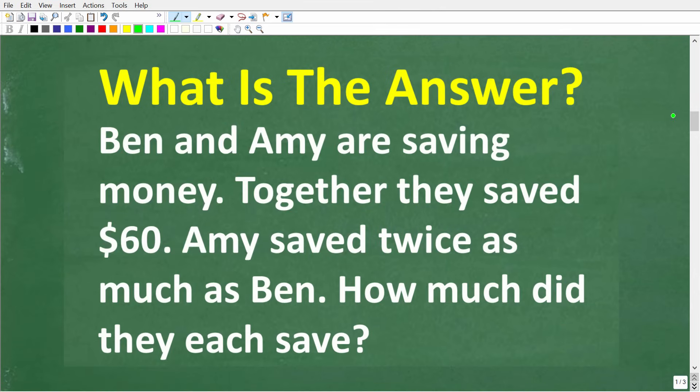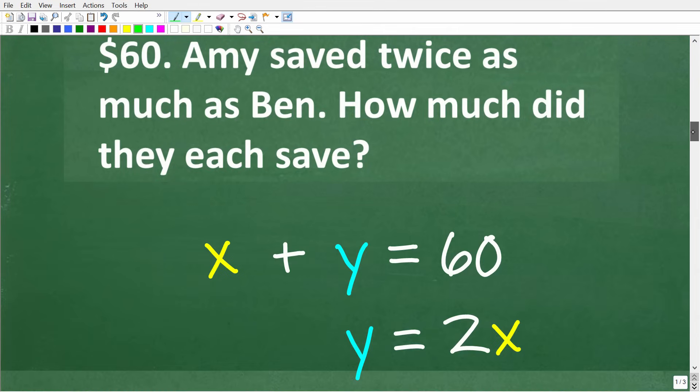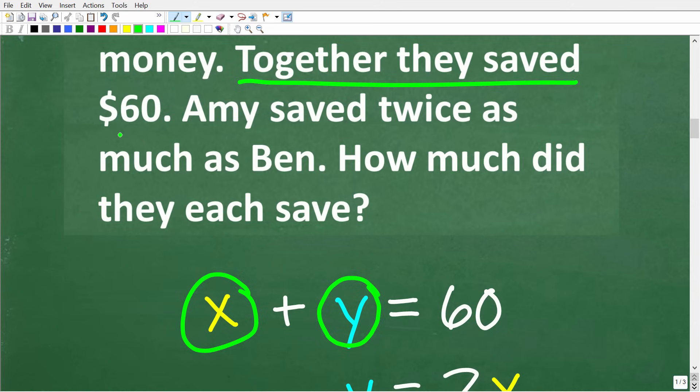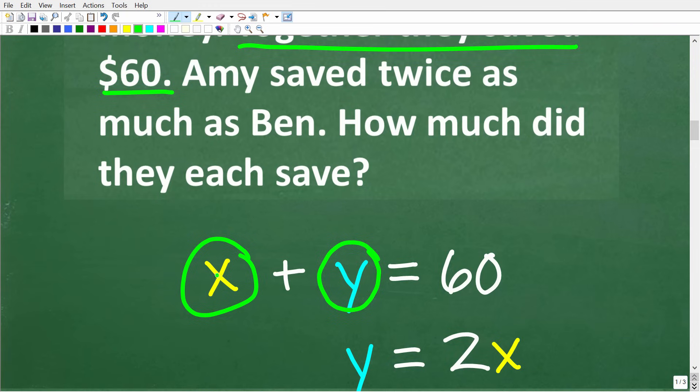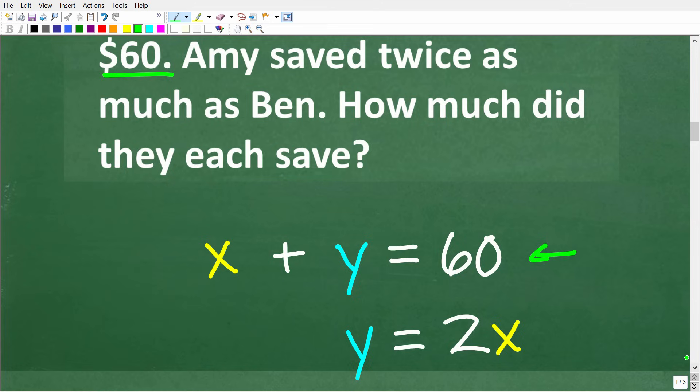So let's do that now. Here is the word problem and of course we're going to use all the information to build these two equations. So let me show you these equations and then of course I will explain them to you. So X plus Y is equal to 60. So what does X represent? Well, remember X is the amount that Ben saved and Y is the amount that Amy saved. So remember here the problem is telling us that together they saved 60 dollars. So Ben's amount plus Amy's amount is 60 dollars. So a simple equation that we can build right here is X plus Y is equal to 60.